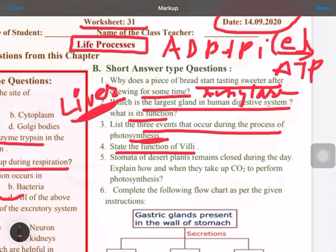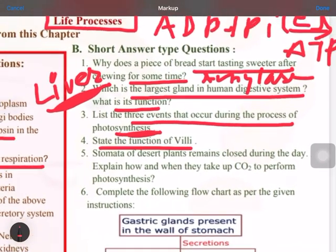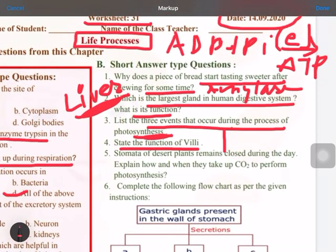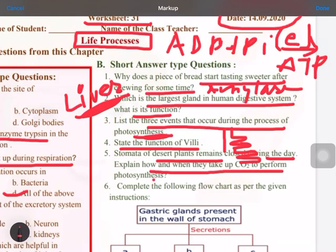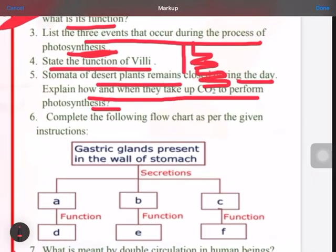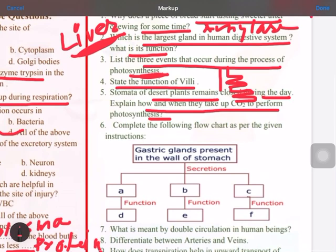So villi is what? These are the finger-like projections present in the small intestine and they are helping in the absorption of digested food and sending this digested food to the different parts of the body. So remember this function. Stomata of desert plants remain closed during the day. Explain how and when they take carbon dioxide.